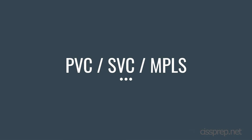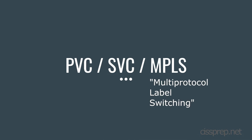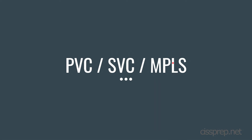Hello and welcome to another quick lesson on permanent virtual circuits, switched virtual circuits, and multi-layer protocol label switching. These are all concepts in domain 4 of the CISSP common body of knowledge. For the CISSP exam you won't need to know the technical details for each of these, but you will need to know how they're used, the basic functionality, and when it might be better to use one versus the other.